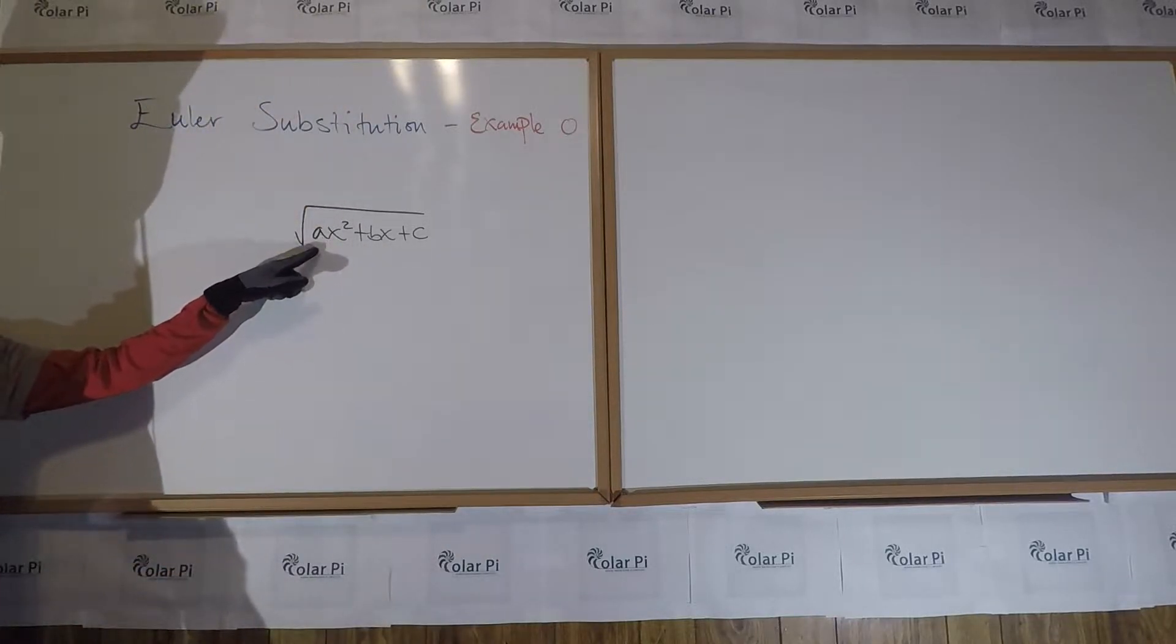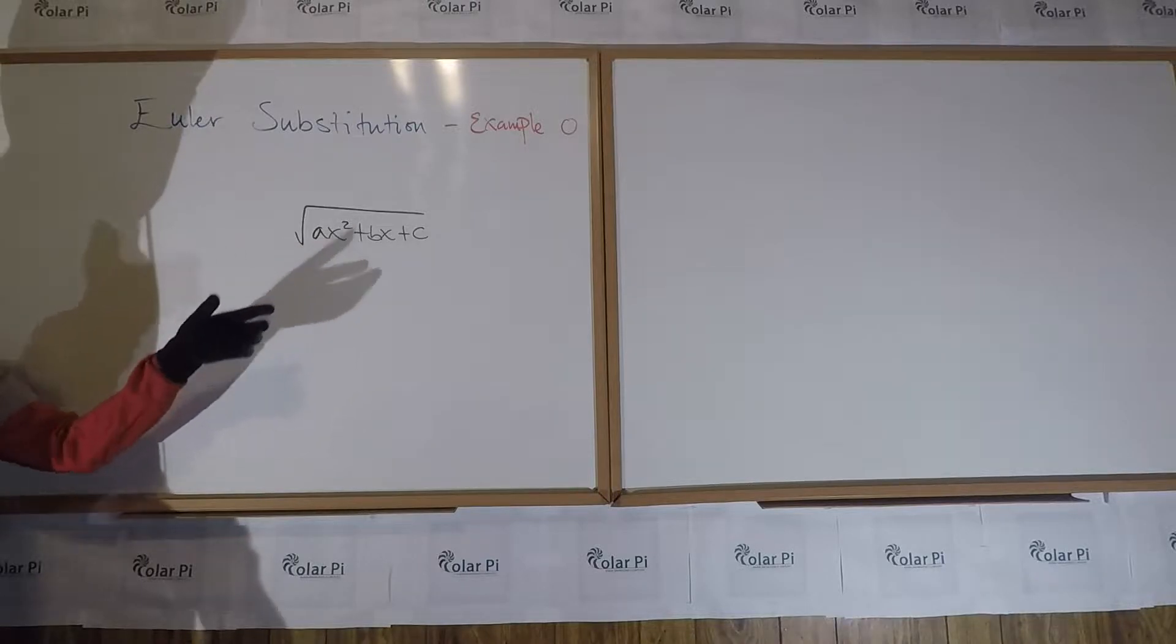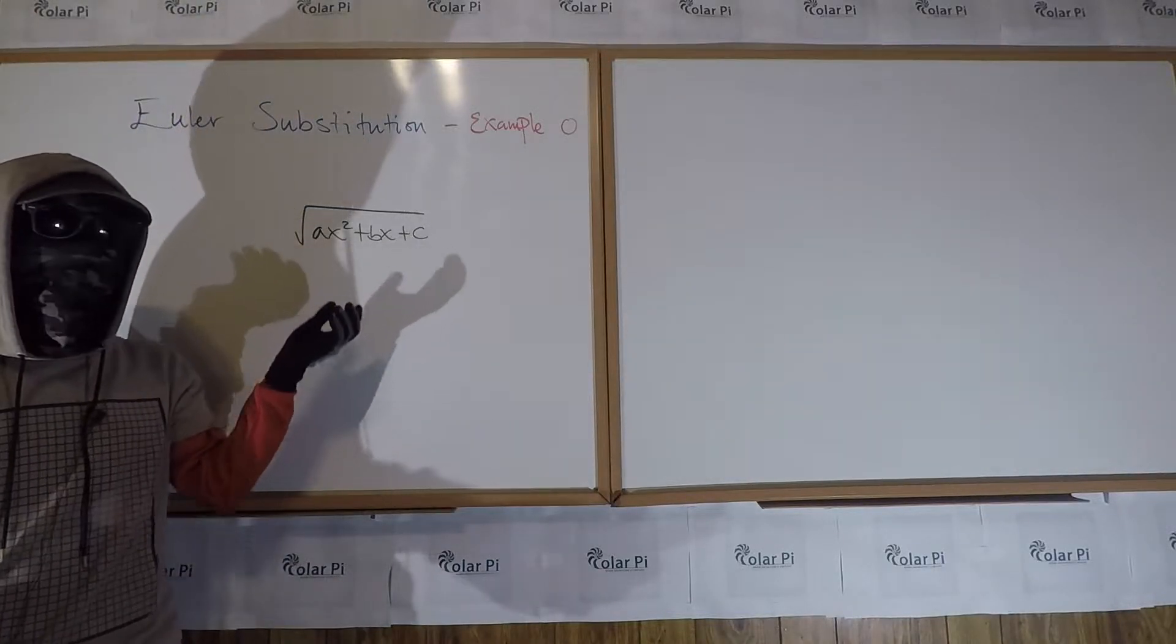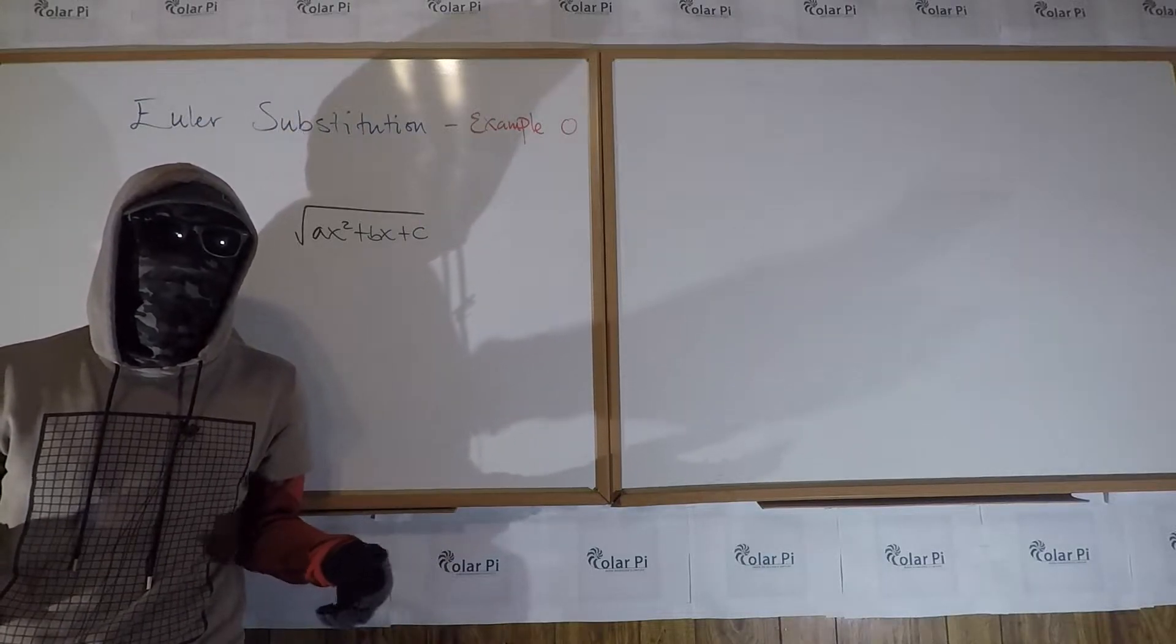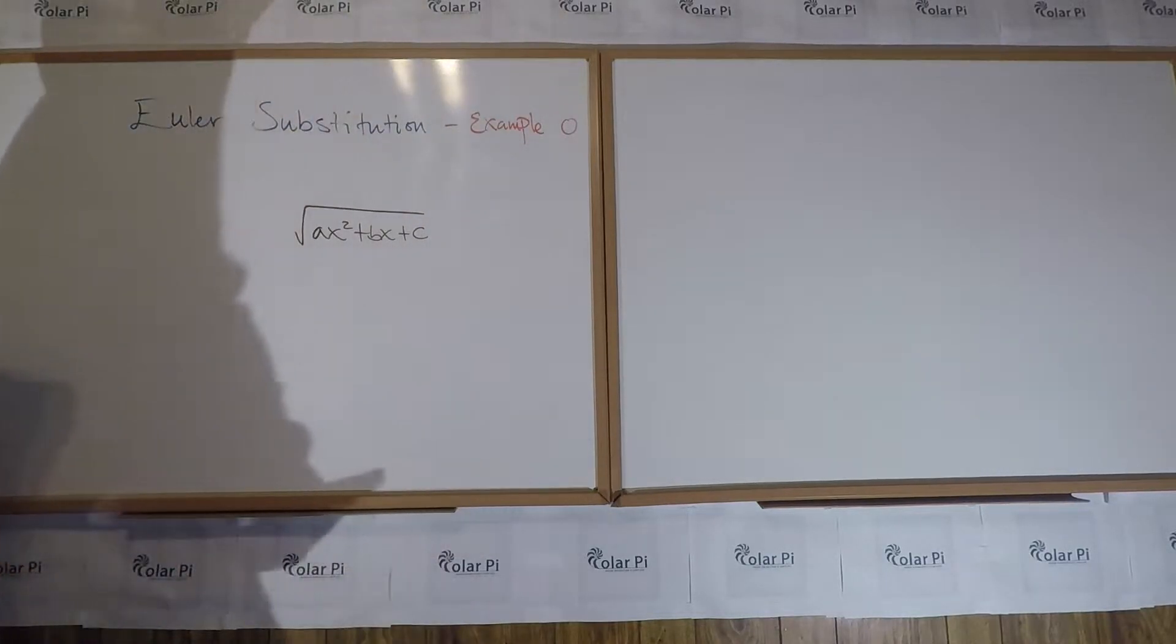Of course, we have to assume that a is not equal to zero, because if a is equal to zero, then you just have a simple linear inside the square root, and you can do basic substitution, aka u substitution.